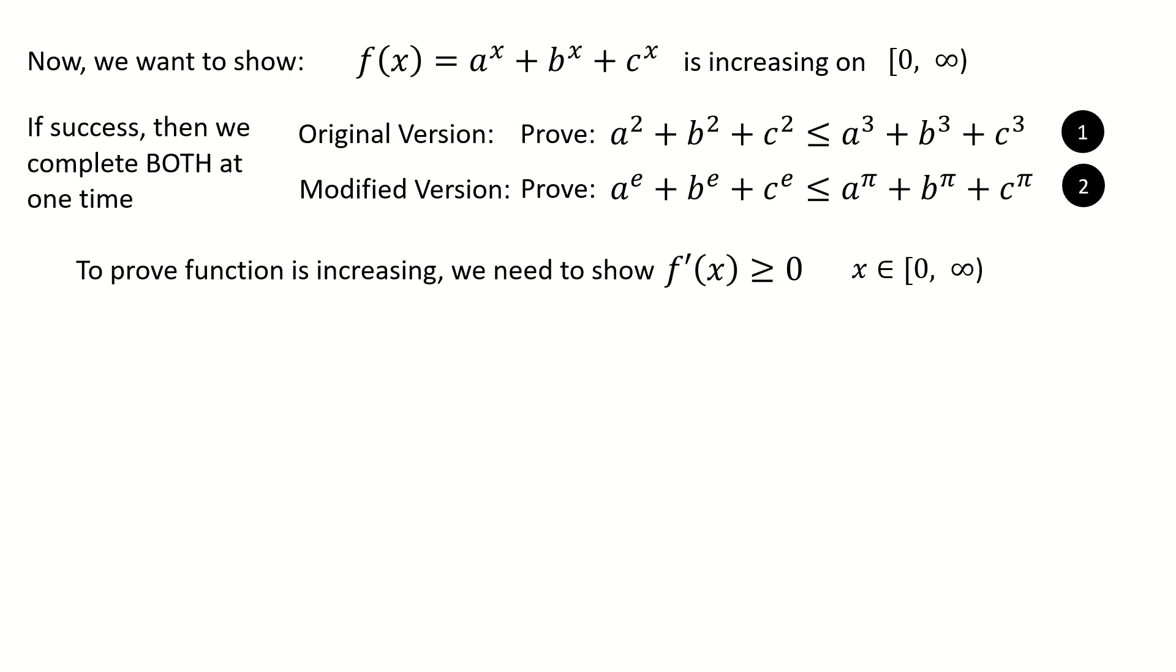To prove f(x) is increasing, we need to show its derivative is non-negative. So we do the derivative for f(x), then we get this expression. But here we know, for a^x, b^x, c^x, they are all positive because they are exponential functions. However, for ln a, ln b, and ln c, we cannot guarantee they are positive.